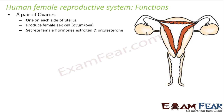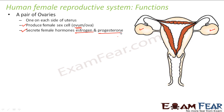Let us talk about the function of each part, starting with the ovaries. There are two ovaries, one on each side of the uterus. Their purpose is to produce the female sex cell, known as ovum, whose plural is ova, also called egg cells. They also secrete the female hormones estrogen and progesterone, just as the male hormone testosterone is produced by the testis. These hormones are responsible for the secondary sexual characters in females, such as breast development and the onset of the menstrual cycle.